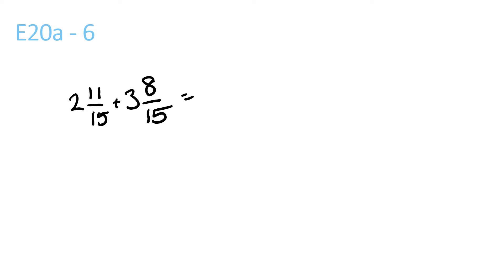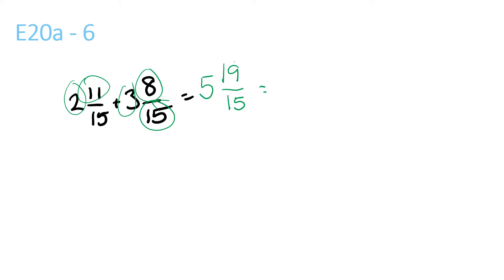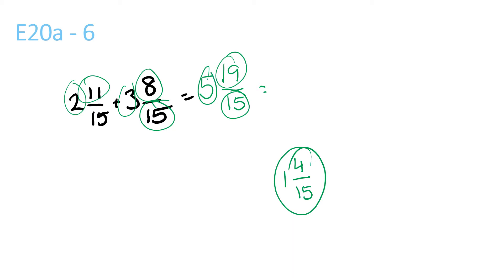For this question: 2 plus 3 is 5. 11 plus 8 is 19, and 15 stays the same, giving 19 over 15. 15 goes into 19 once with a remainder of 4 over 15. So 1 and 4 over 15 plus 5 is 6 and 4 over 15.